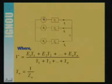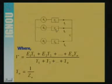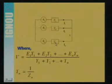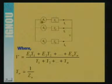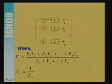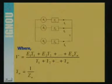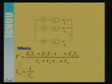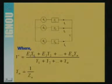Here: one voltage source E1 with internal impedance Z1, second E2 with internal impedance Z2, and so on up to En with impedance Zn. This whole network can be replaced by an equivalent voltage source and equivalent impedance. The value of this equivalent voltage source V equals E1·Y1 plus E2·Y2, and so on, where Y1 equals 1/Z1 and Y2 equals 1/Z2.